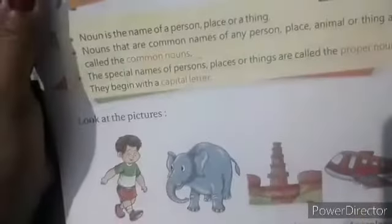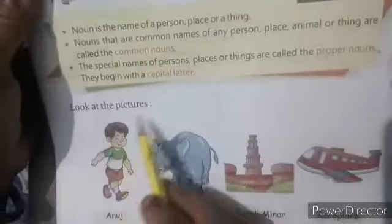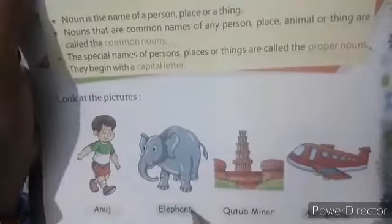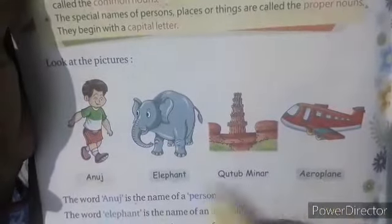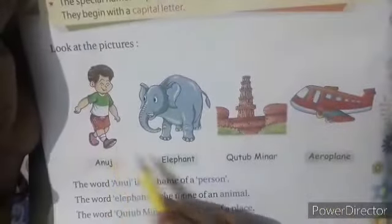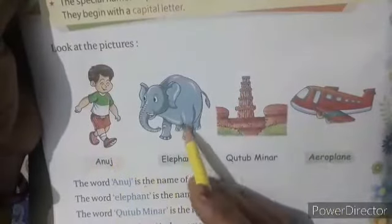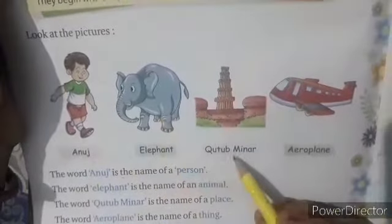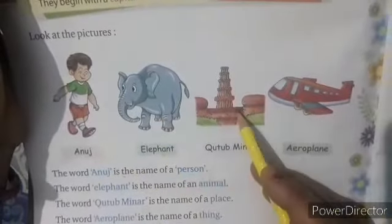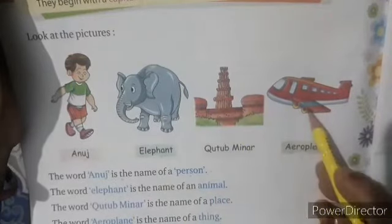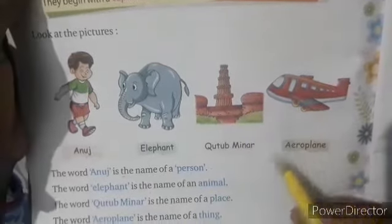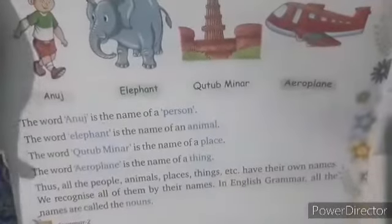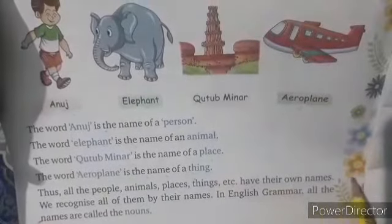Now look at the pictures. Tasviro ko dekho. Anuj, elephant, Qutub Minar, aeroplane. Anuj is the name of a person. Elephant is the name of an animal. Qutub Minar is the name of a place. Aeroplane is the name of a thing. So all people, animals, places, things, etc. have their own names.